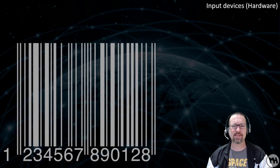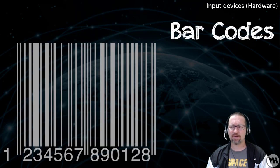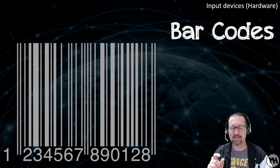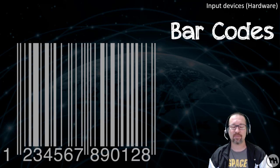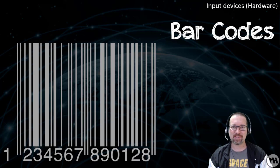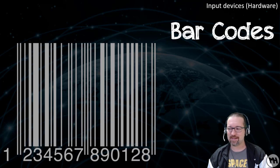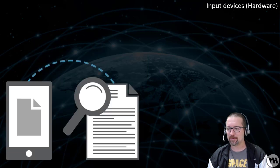Of course you know what barcodes are. Barcodes contain information depending on the thickness of the lines and the width of the spaces between them. When scanned, that tells the device what information the product contains.